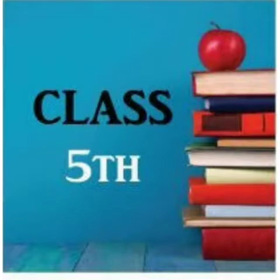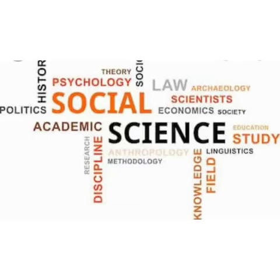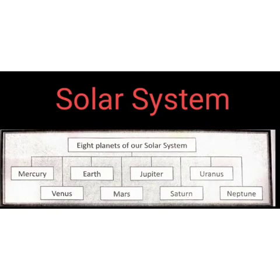Our solar system consists of a star named the sun, and the planets Mercury, Venus, Earth, Mars, Jupiter, Saturn, Uranus, and Neptune. It also includes the satellites of the planets.